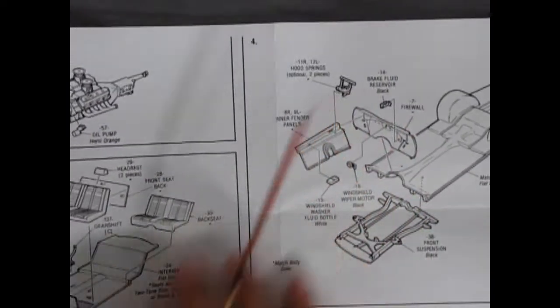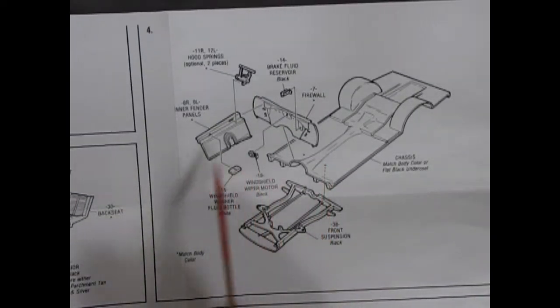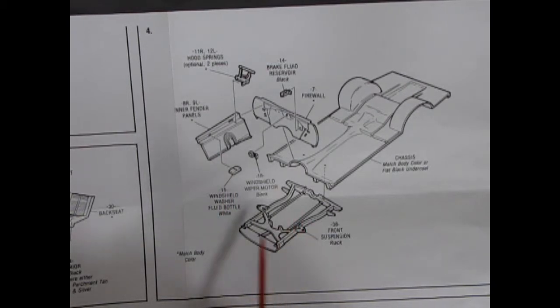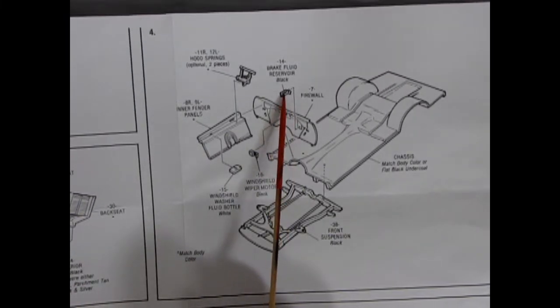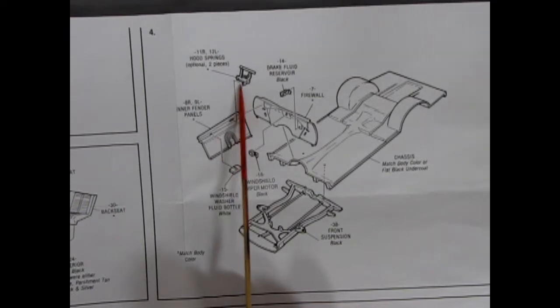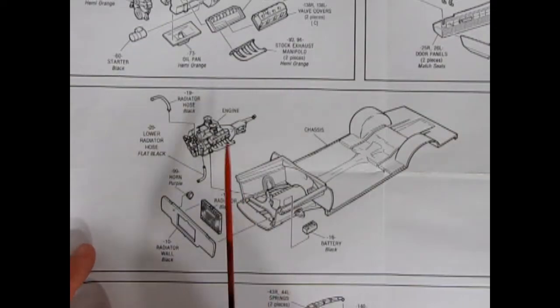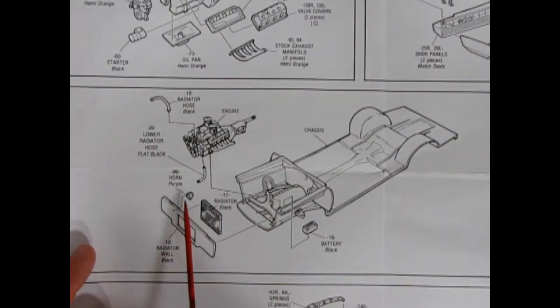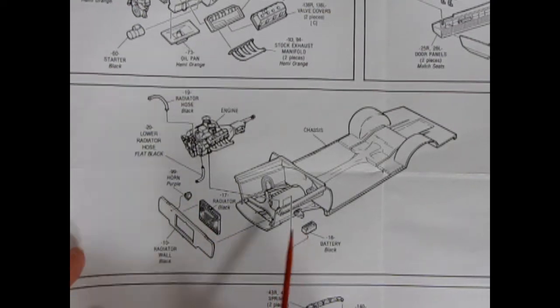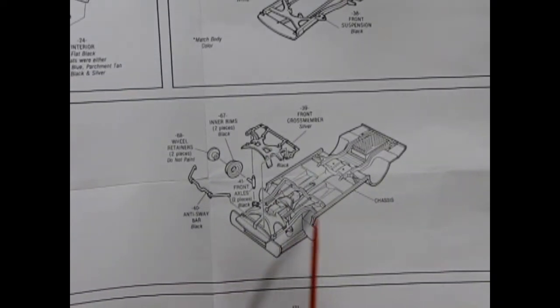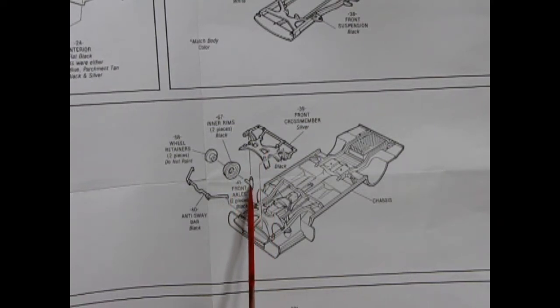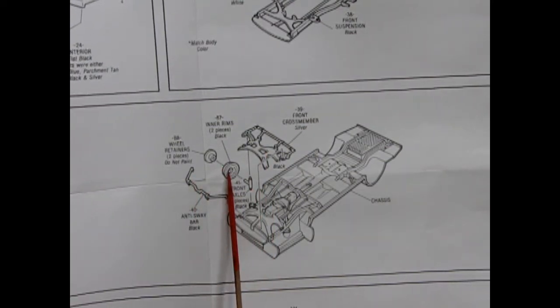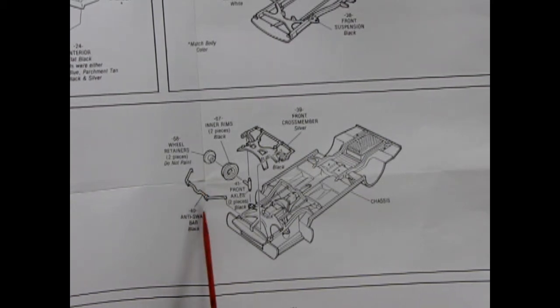Moving over here panel number four, you get inner fender panels, the front suspension and frame rails, as well as the firewall subframe rails, the brake fluid reservoir and hood springs optional to have your hood displayed upward. Then we have our engine radiator hose, radiator wall, a purple horn of course as with the Roadrunner, the radiator on there and our battery. And then this panel way over here we have our chassis, the front cross member, the front axles and the rear wheel backs with wheel retainers and an anti-sway bar.